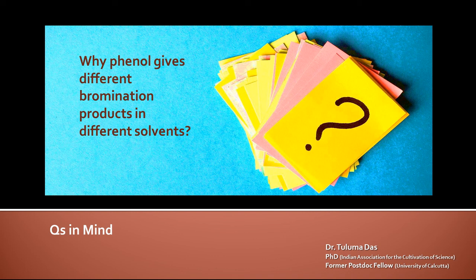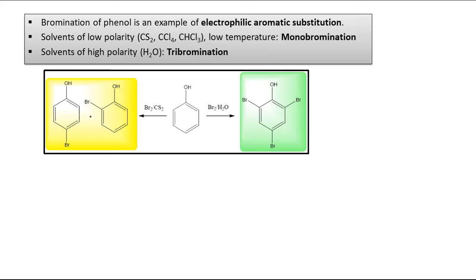Hello everyone, today we are going to discuss the question: why does phenol give different bromination products in different solvents? Depending on what kind of solvent you have taken — whether a polar solvent like water or a nonpolar organic solvent — the product is different. We are going to see the reason behind that.